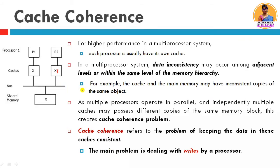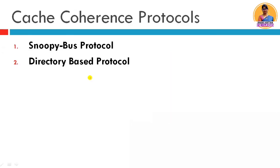How do we solve this Cache Coherence Problem? There are two protocols — two mechanisms or schemes — called Cache Coherence Protocols. One is the Snoopy Bus Protocol and the second is the Directory Based Protocol. The Snoopy Bus Protocol is used in bus-based systems, such as symmetric multi-processors connected through a common bus. A limitation of Snoopy Bus Protocol is that it cannot scale to a large number of processors, so scalability is an issue.